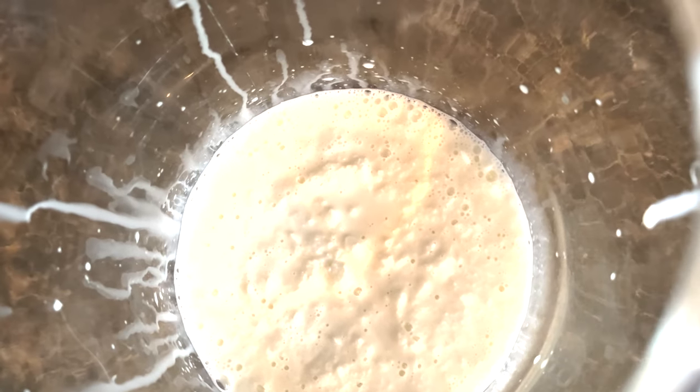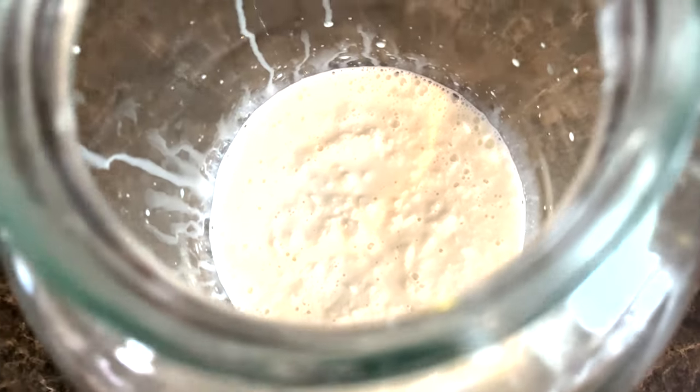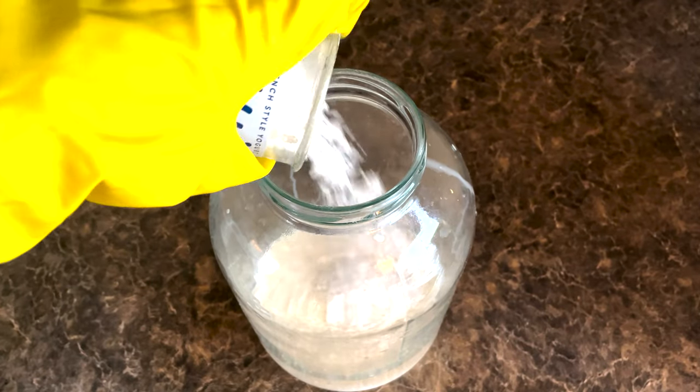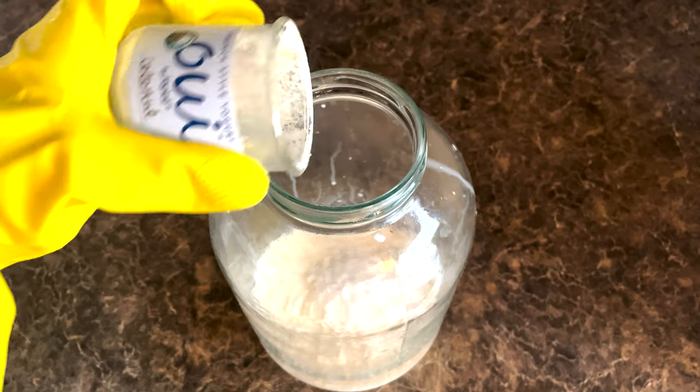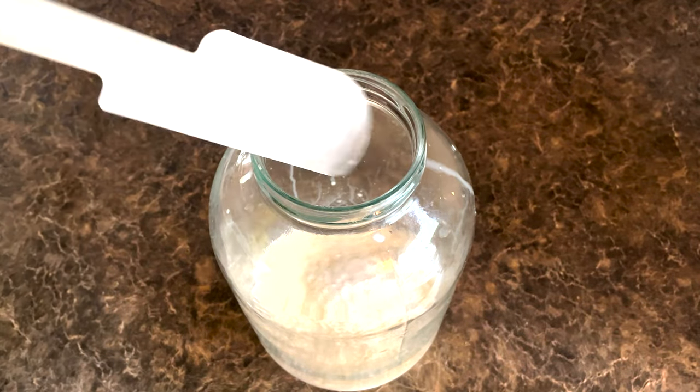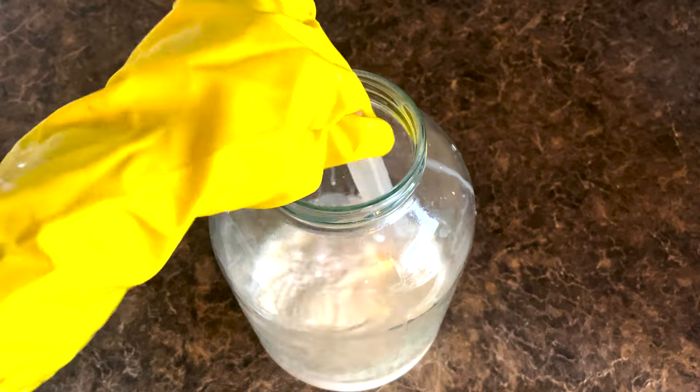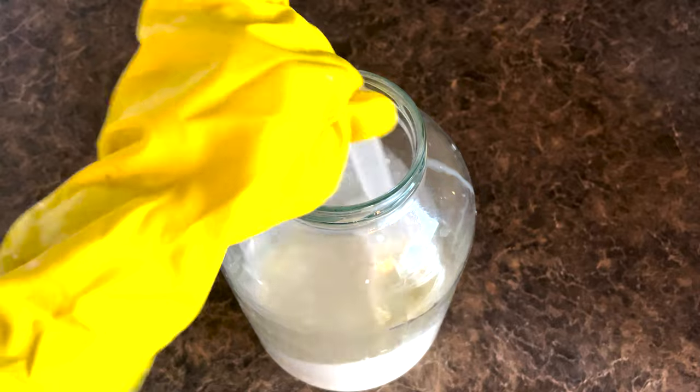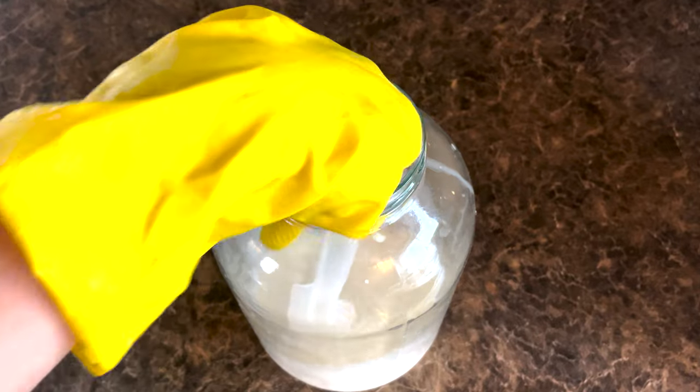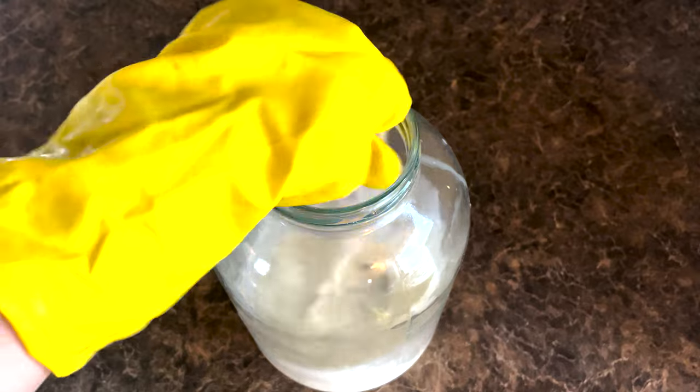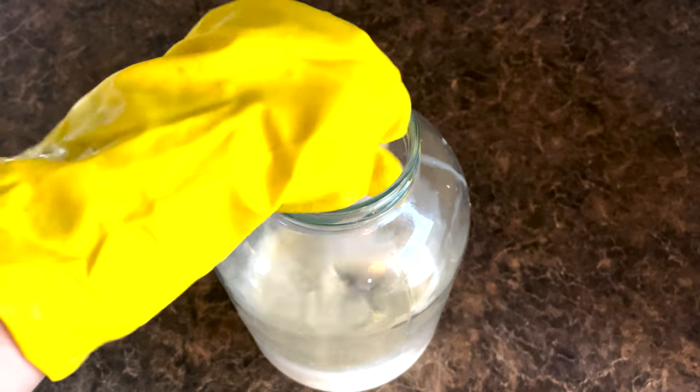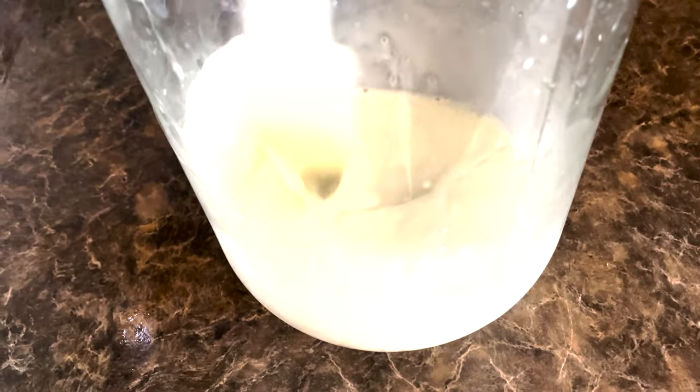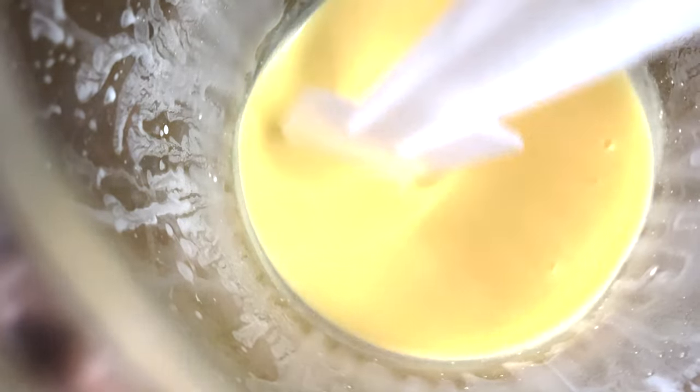Now that we have our lye combined with our milk, we want to go ahead and stir that, and we're going to continue to stir this mixture until the goat's milk is completely melted with the lye. When this milk is added in with the lye, the lye will start to warm up the milk, creating the milk to melt, and in some cases it will change color to yellow or bright orange.